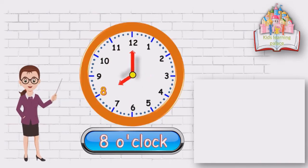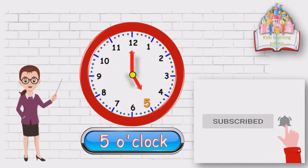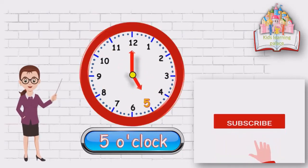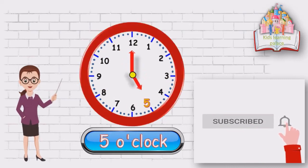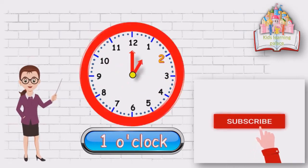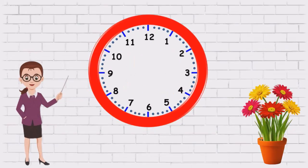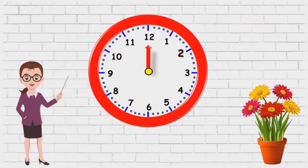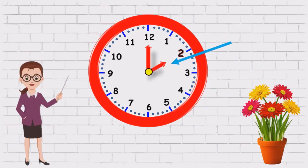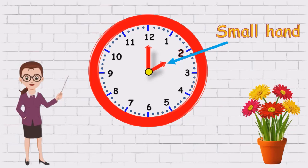This is a clock. A clock tells us time. This is the clock face. A clock has two hands: a big hand and a small hand. The big hand is called the minute hand. The small hand is called the hour's hand.